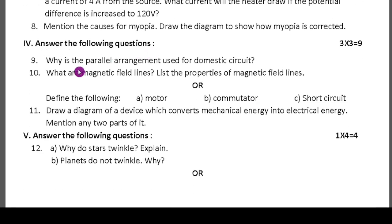Fourth main, answer the following questions. Ninth question: why is the parallel arrangement used for domestic circuits? Three marks question, you have to explain properly. Tenth question: what are the magnetic field lines? List the property of magnetic field. Very easy. In that you have choice - which one you know perfectly, you can select that one. Define the following: motor, commutator, and short circuit. These three are also very easy. Better instead of going that, you can follow because each question carries one mark, very easy. You can write the definition of each thing.